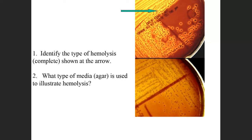Other than that, it's going to be something else. If you don't see parentheses next to the question that says positive or negative, it's going to be something else. Much more detail is going to be needed for this particular practical. So what type of hemolysis are you looking at at the arrow?